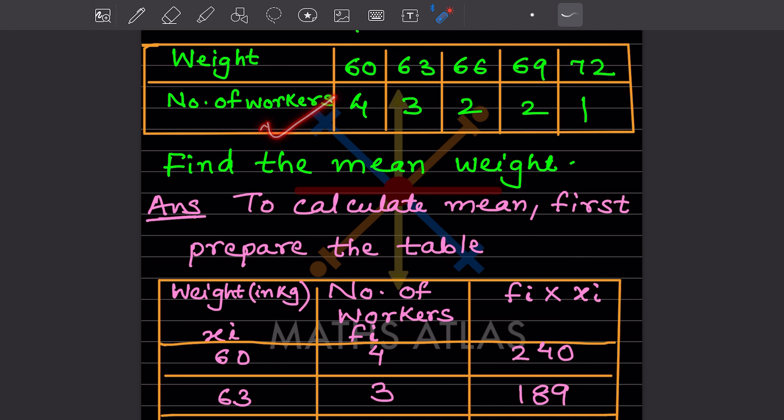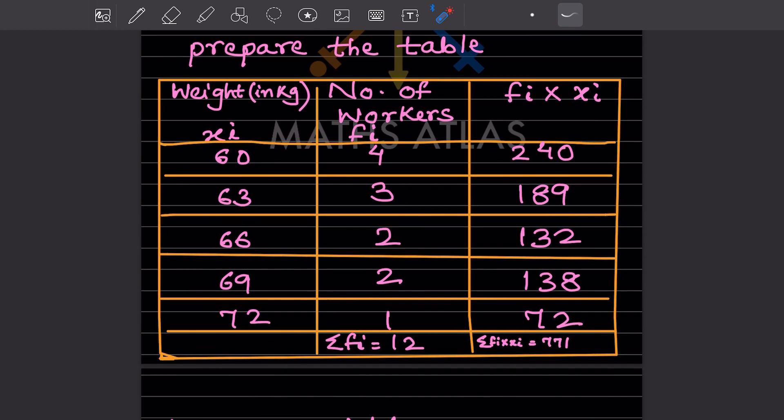From this table, we have to find fi times xi, that is the number of workers multiplied by the weight. First, we'll write the weight in one column as xi, the number of workers as fi, and then multiply them. That is fi into xi.